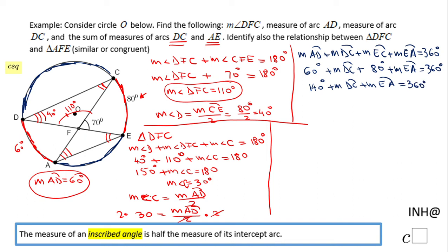So we subtract 140 and we have the sum of the measure of arc DC and EA, that will be 360 minus 140, that will be 220 degrees. And that's it for the third part.